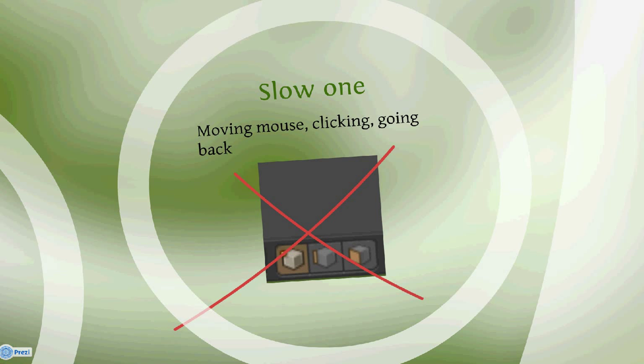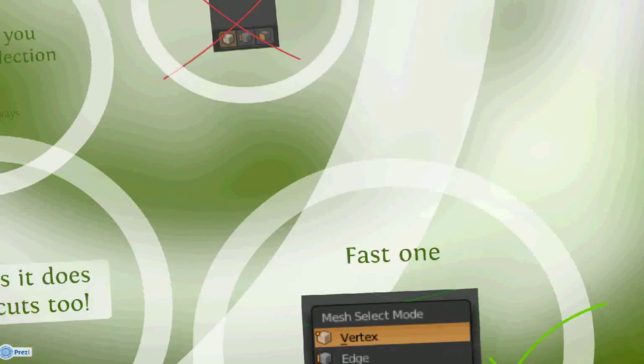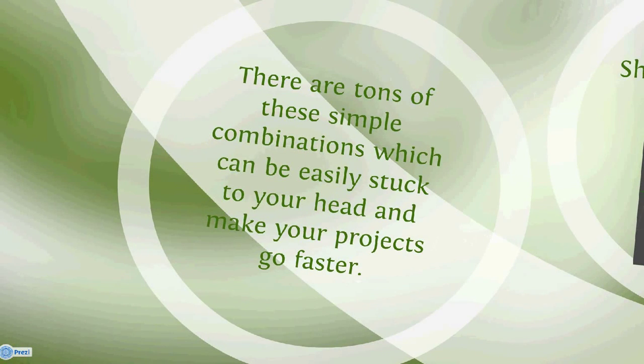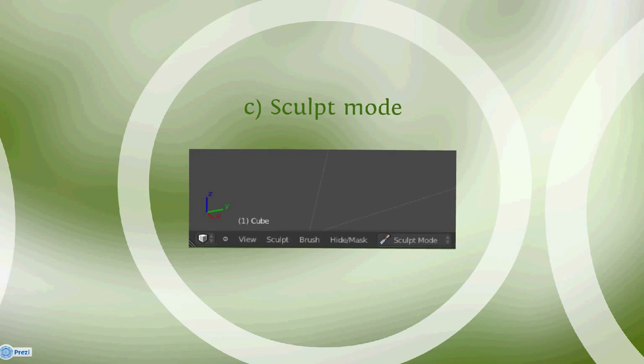I don't think that it will be hard for you to remember a combination of two keys for a thing that is used every time you select. It's as simple as Ctrl Tab and you don't need to move your mouse through the whole screen. The menu comes next to you itself. There are tons of these simple combinations which can easily get stuck to your head and make a project go faster. Almost all keyboard keys do something, and then it changes the function when you add Shift, Ctrl or Alt. It could sound hard and demotivating, but it becomes really simple when you learn those.